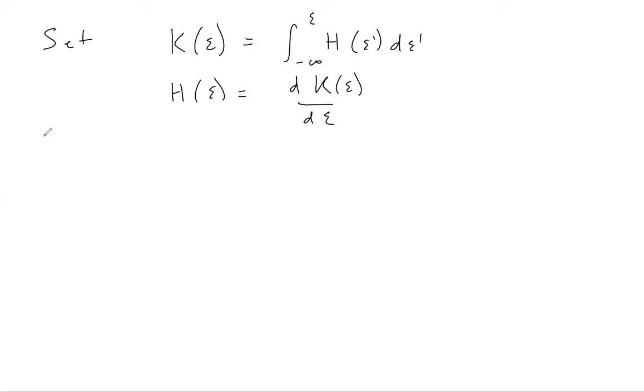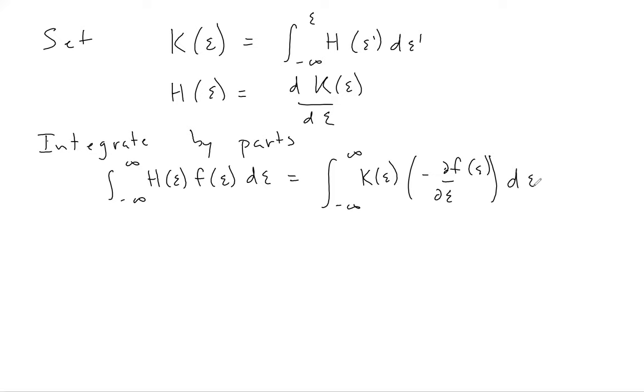Now let's integrate the expression we care about by parts. So the thing we care about is the integral of H times F. This is equal to the integral from minus infinity to infinity of K times minus dF/dE. And we got this by using the product rule.